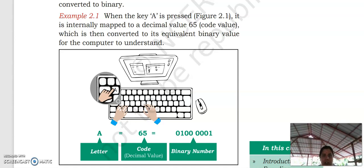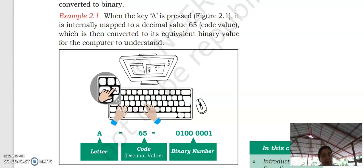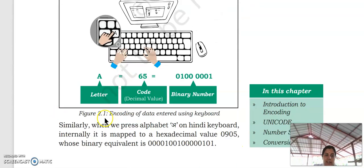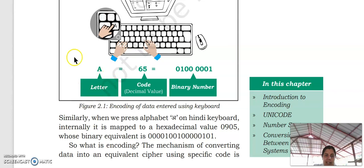So this decimal value is again converted into its equivalent binary value. Binary value means it contains only zeros and ones — then the computer will understand. When we are pressing A, first its decimal value is formed which is 65, then this decimal value is converted to binary value. If we are pressing the letter A, corresponding decimal value 65 is formed, and corresponding binary number 01000001 is formed, which is understandable to the computer.